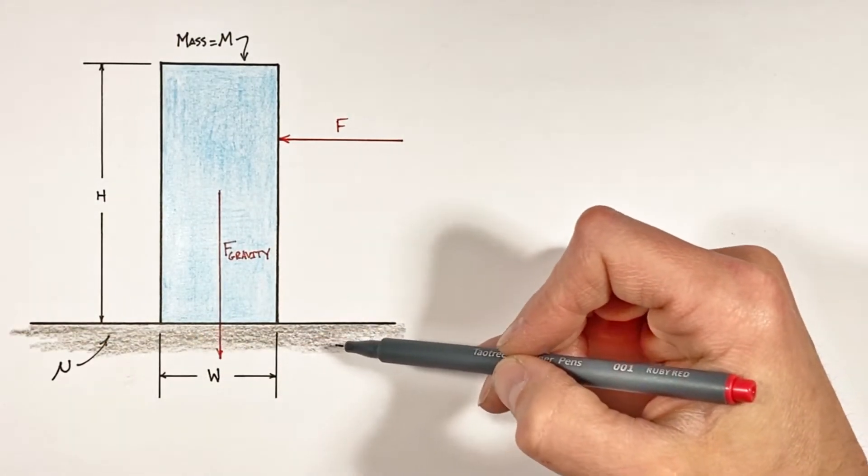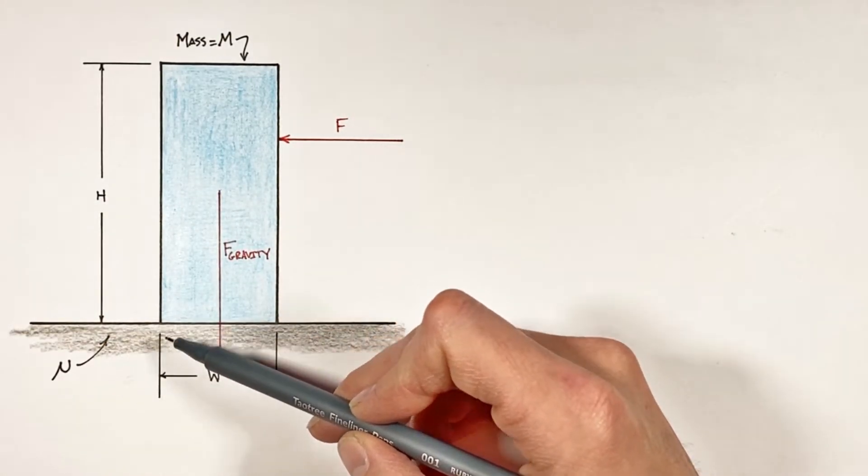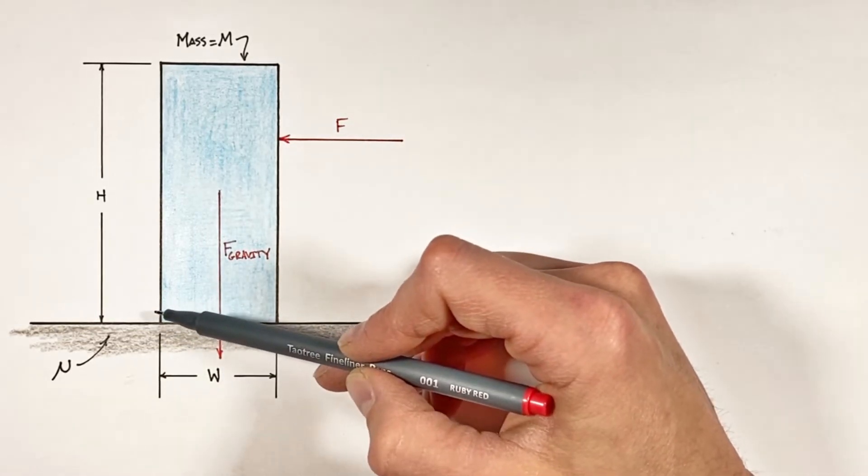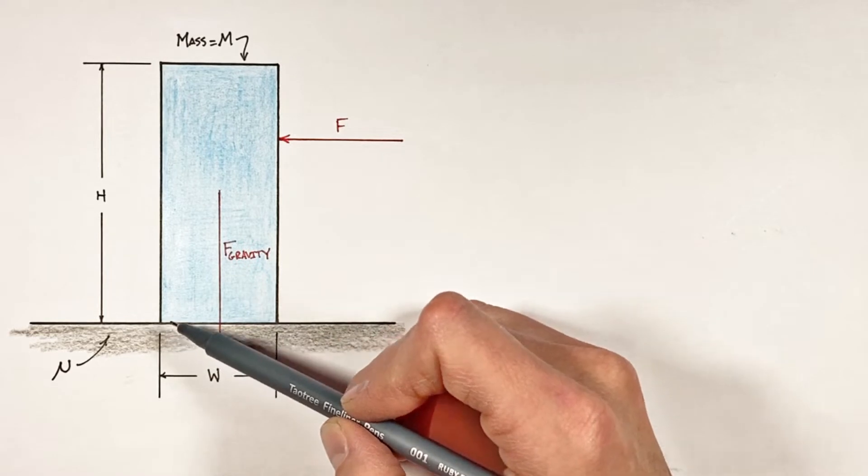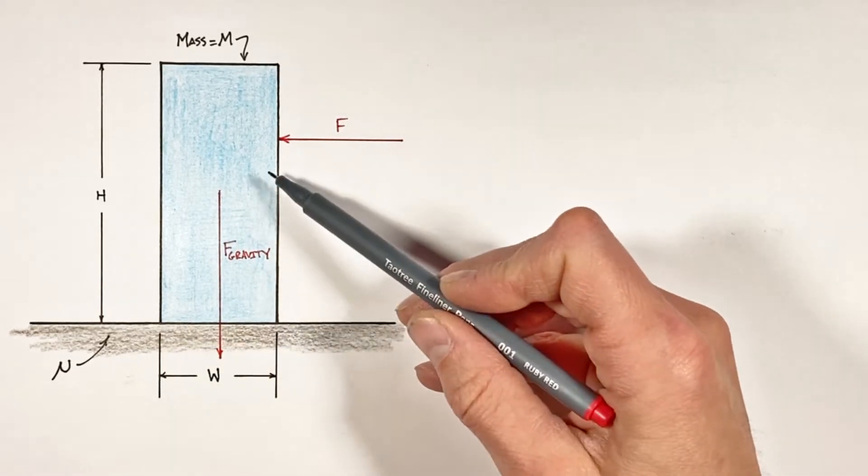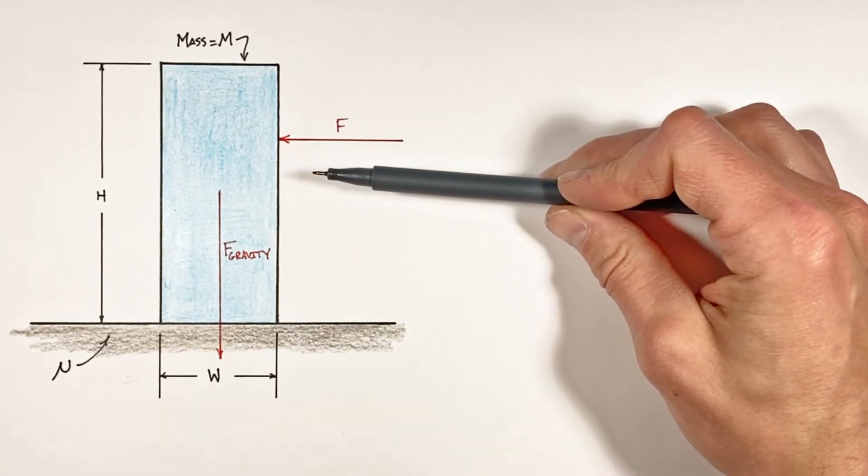And because this ground is rough, there's some friction between the block and the ground. Regardless of whether the block tips or slides, the friction is going to be acting along the bottom of the block in the opposite direction we're trying to push the block.